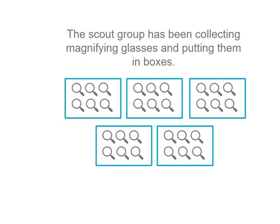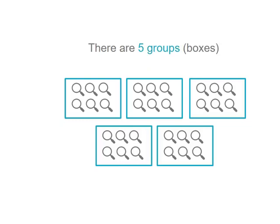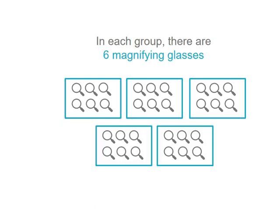The Scout group has been collecting magnifying glasses and putting them in boxes, and each box has the same number of magnifying glasses. There are five boxes here, so we have five groups. In each group, there are six magnifying glasses.